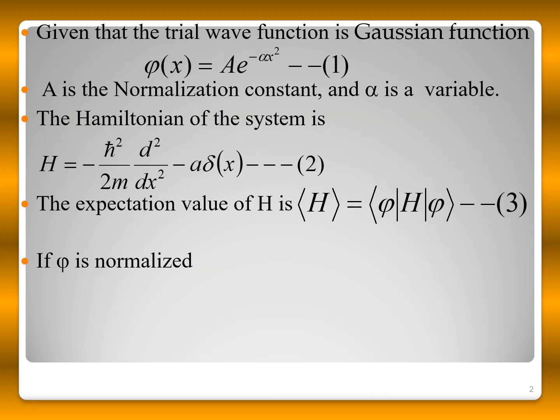We use the variational principle with a Gaussian trial wave function given as ψ = A·e^(−αx²), where A is the normalization constant and α is the variational parameter.